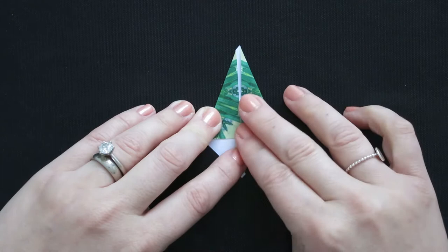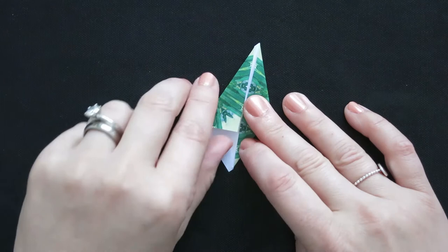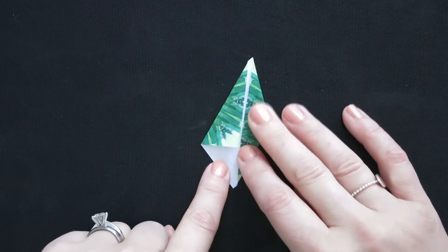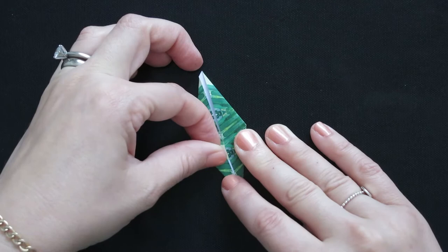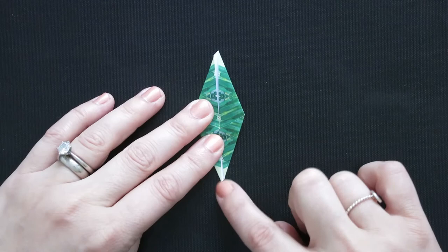I'm going to do the same thing on the other side. So again, where the flat single layer is, that edge is going to come into the middle and crease. Once again pivoting at that point, so you're not overlapping anything and you're not ending up with any white space down here.